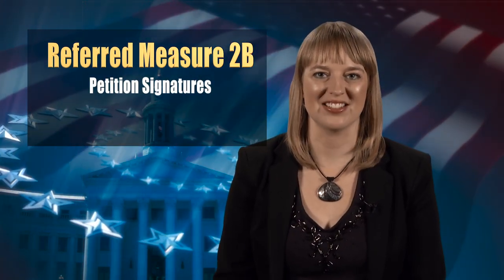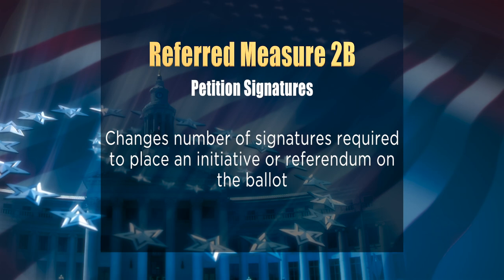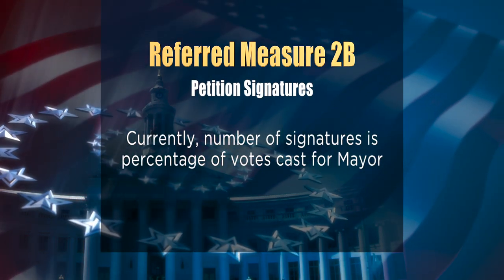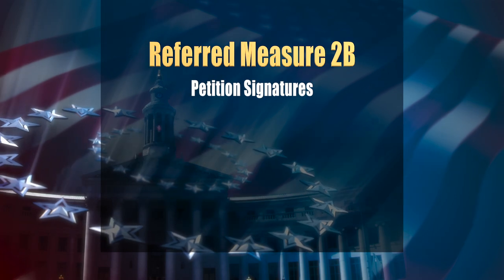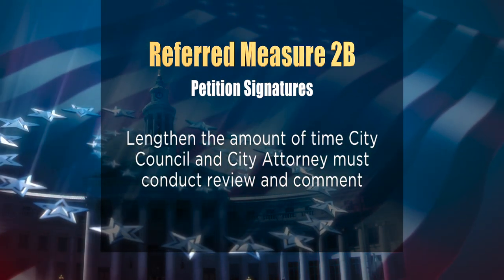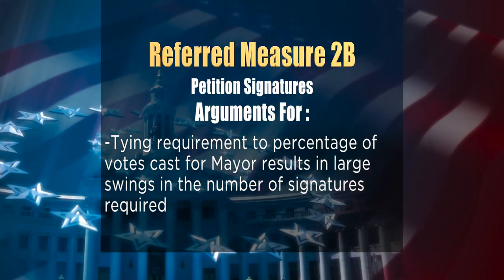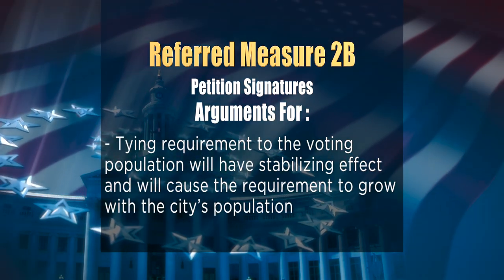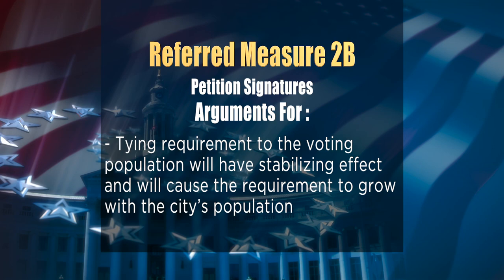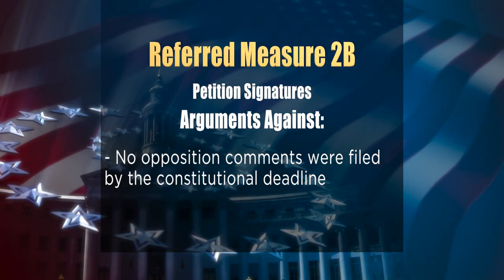Next up is Referred Measure 2B, which concerns getting measures on the ballot. It proposes a change in the number of valid signatures required to place an initiative or referendum on the ballot. Currently, the number of signatures required is a percentage of votes cast for mayor in the last election. Under this proposal, it would change to a percentage of active registered voters in Denver, and would also lengthen the time during which city council and the city attorney must conduct review and comment for proposed initiatives. Proponents say tying the signature requirement to the voting population will have a stabilizing effect and cause the requirement to grow with the city's population. No opposition comments were filed by the constitutional deadline.